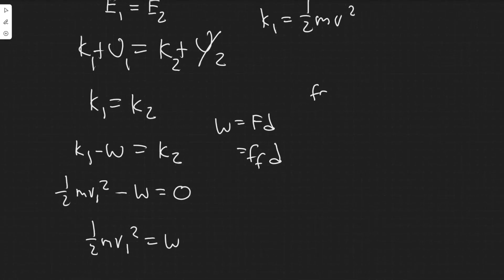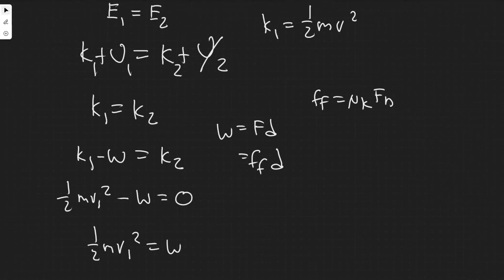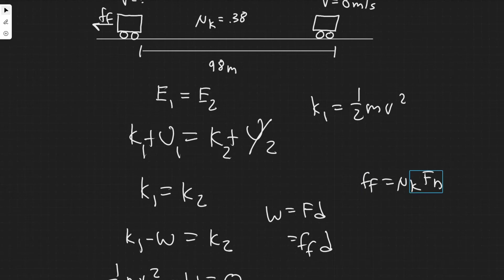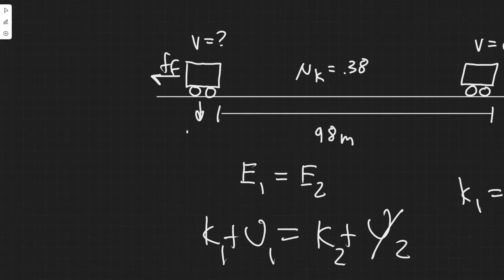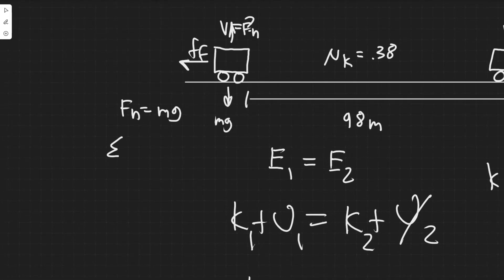The formula for force of friction is equal to μk times the normal force. How do we find the normal force? We know the only two forces acting in the y are mg, the force due to gravity, and Fn. So Fn equals mg. You should just know that by now.